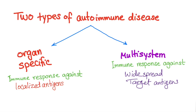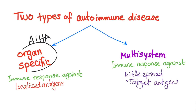As a general rule, when we talk about autoimmune disease, we have two types: either organ-specific or multi-system. Autoimmune hemolytic anemia is organ-specific because it affects only the red blood cells — only one organ or one system, with localized antigens. Multi-system, however, is an immune response against widespread target antigens. A good example of this is lupus.